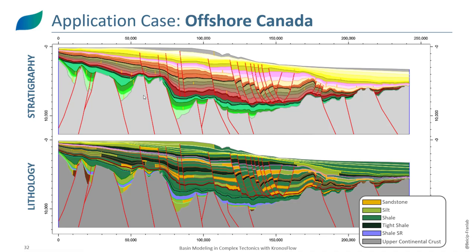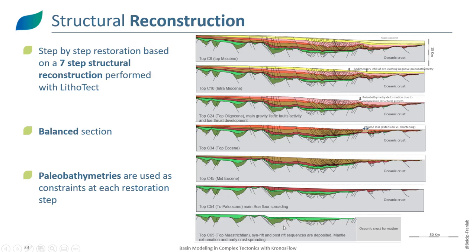Now let's look at an extensive model where properly representing faults brings strong benefits. This is a passive margin offshore Canada with a detailed stratigraphy including clastics — a mix of shale and sandstones from seismic stratigraphy. To drive the restoration we used seven restoration steps from a balanced section that we refined from seven units into 25, using paleobathymetry at every time step to drive the restoration within Chronos Flow.